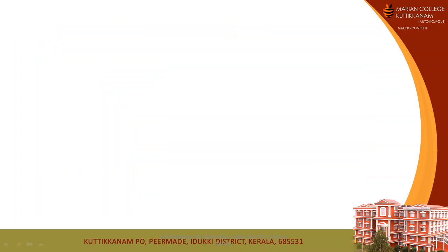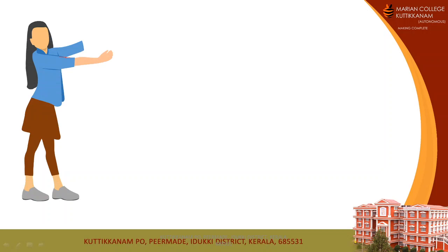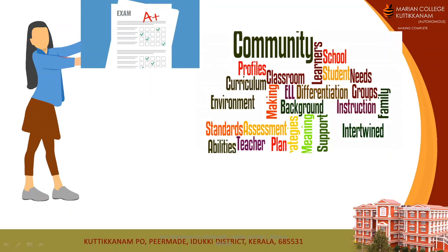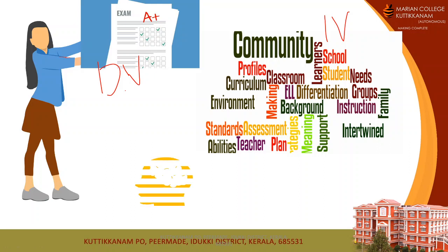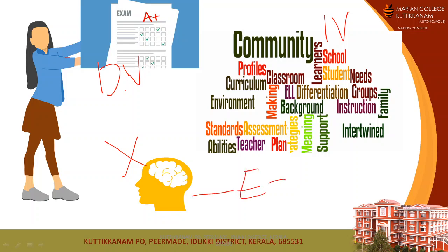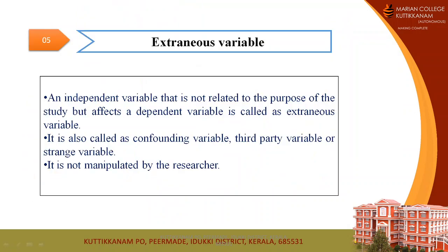Here is another example. In a study, a researcher wants to test a hypothesis that there is a relationship between a student's marks in a subject and the learning environment. Here, learning environment acts as the independent variable and the student's marks act as the dependent variable. We all know that intelligence will also affect a student's marks, but since this study is only focusing on the learning environment, intelligence is not considered — so intelligence acts as an extraneous variable.